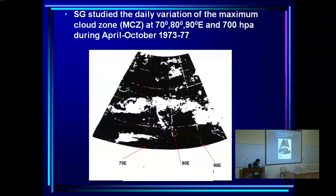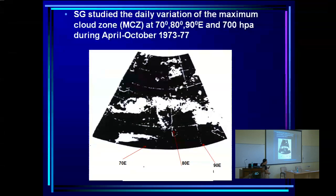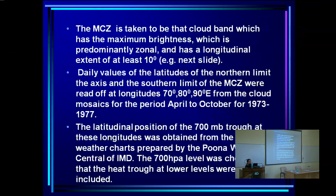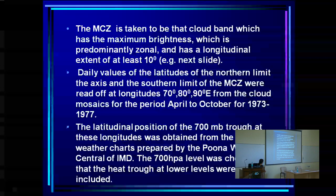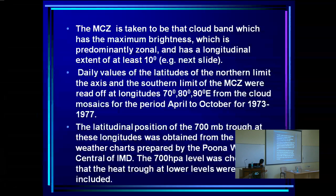We looked at the daily variation of what we call the Maximum Cloudiness Zone (MCZ) — at 70, 80, and 90 degrees East, we noted the southern limit and axis of the band in terms of latitude, done entirely subjectively, day after day. The MCZ is defined as the cloud bank with maximum brightness that is predominantly zonal and has a longitudinal extent of at least 10 degrees.